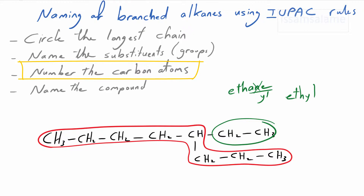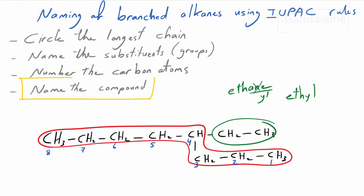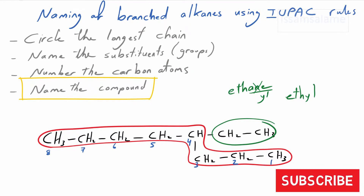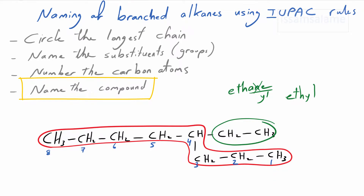The third step is to number the carbon atoms. We start either from the left or from the right. If we start from the left, the group is at carbon 5; if we start from the right, the group is at carbon 4. So we start numbering from the right to give the group the lowest possible number. The fourth step: mention the number where the group is located, separate it from the name by a hyphen, then name the longest chain. We separate numbers from words by hyphens, and numbers from each other by commas. So the name is 4-ethyloctane.